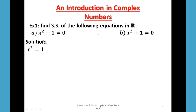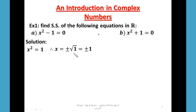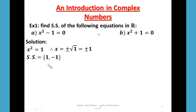Solution. With respect to Part A, we have x² - 1 = 0, so x² = 1. Therefore x = ±√1, which equals ±1. Both 1 and -1 are real numbers, so the solution set equals {1, -1}.